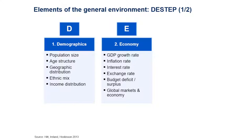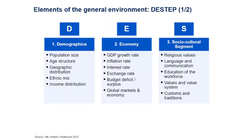The second element, E, is economy — quite straightforward. We look at GDP growth, inflation, interest and exchange rates, things that impact our financial performance. The third element is the social-cultural segment, which is more sophisticated and qualitative. We look at religious values, language, communication, education trends, the value system of a country, customs and traditions. Those are the first three steps — D, E, and S — in the DESTEP model.